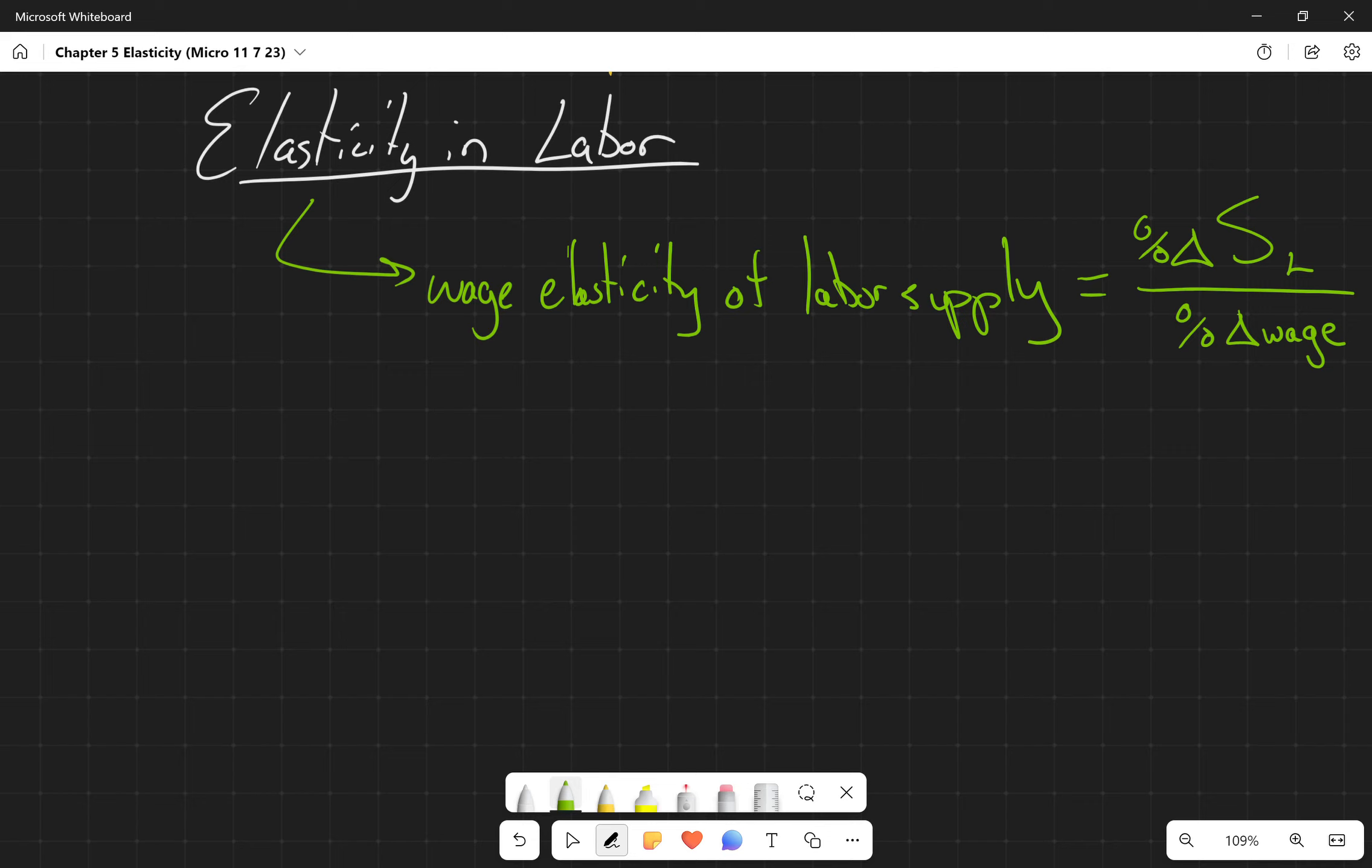Conversely, if the equilibrium wage is increasing significantly, this is going to incentivize people into the labor force. Maybe if you knew that you could get a job working on an oil field for $130,000, you wouldn't be in school right now.